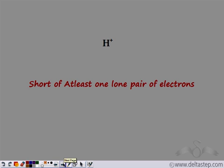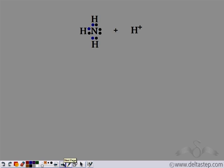We know a hydrogen atom has one electron. When it loses one electron, it becomes H+. Now in order to have a duplet structure, it needs two electrons. That is, this H+ is short of one lone pair of electrons. So now we have our two species — one which has at least one lone pair of electrons and another which is short of one lone pair of electrons.